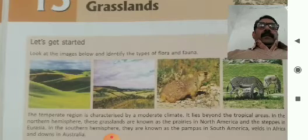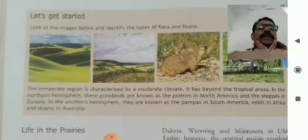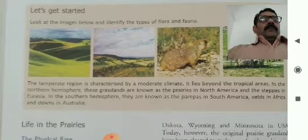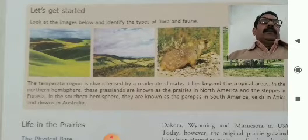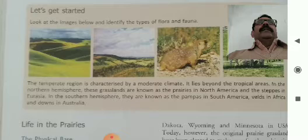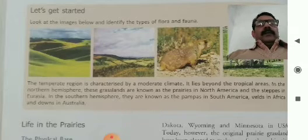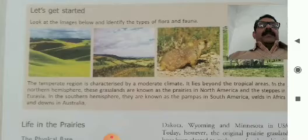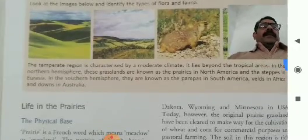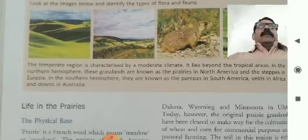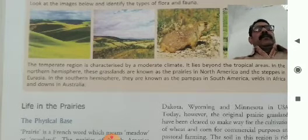The temperate region is characterized by a moderate climate. Temperate means neither too hot nor too cold — that is the moderate climate. It lies beyond the tropical areas. In the Northern Hemisphere, these grasslands are known as the prairies in North America and the steppes in Eurasia. Eurasia means Asia and the part of Europe that constitutes Eurasia.